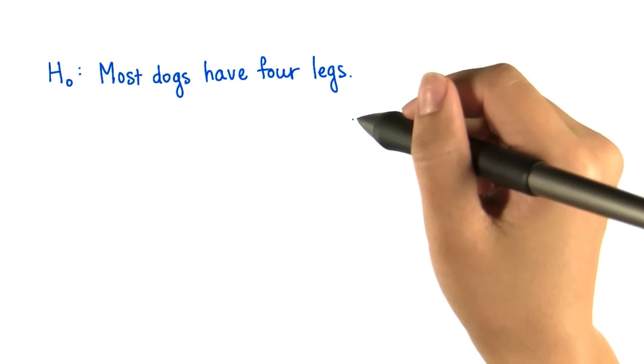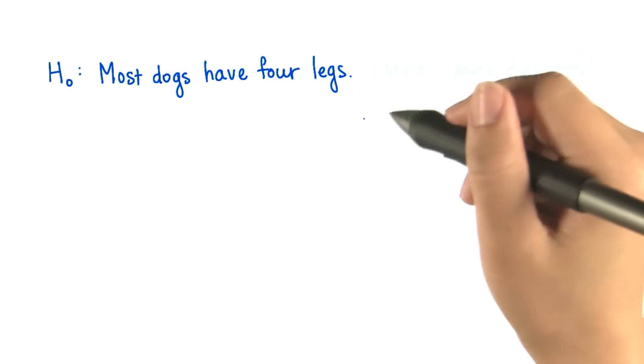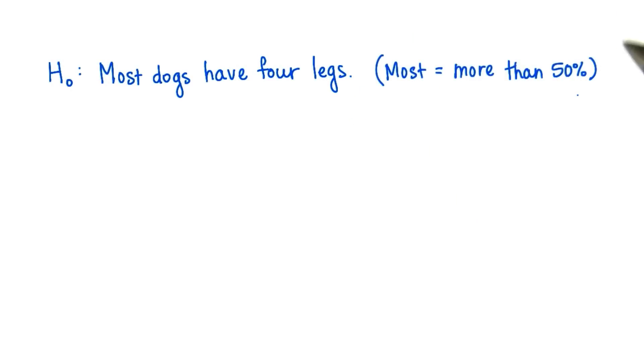Let's say our null hypothesis is that most dogs have four legs. And we define most as more than 50% of dogs. This 50% is analogous to our alpha level where we set our criterion for making a decision.